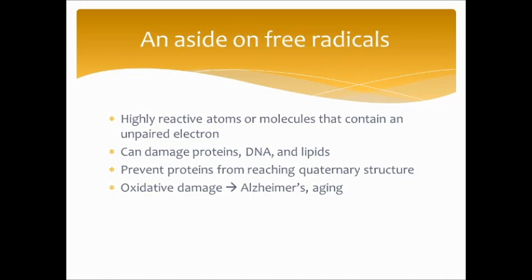When free radicals damage proteins, they can prevent them from reaching their quaternary structure. If a protein doesn't reach its final structure — whether primary, secondary, tertiary, or quaternary — it cannot perform its usual function. The damage caused by free radicals is called oxidative damage, and it has implications with Alzheimer's disease, other chronic diseases associated with age, and aging in general.